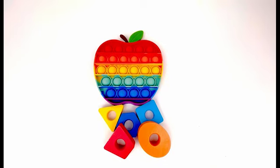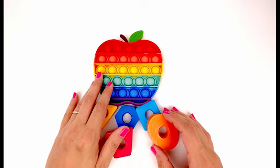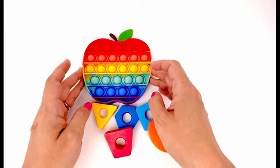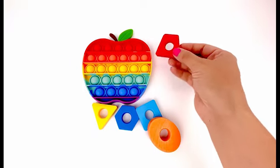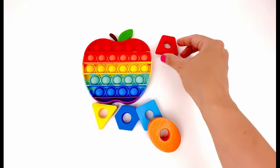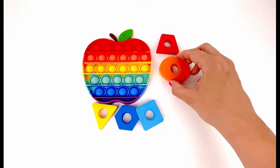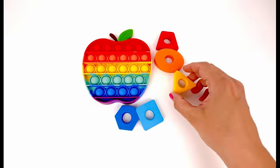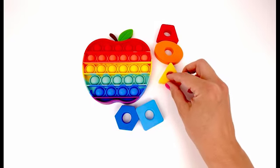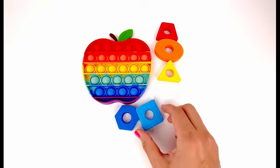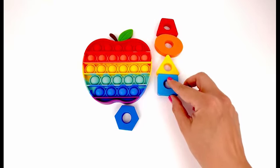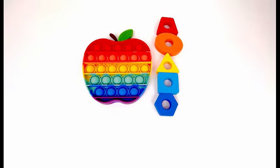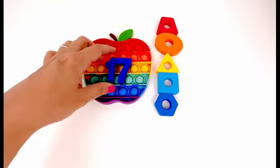We have a pop-up toy here and some shapes with different colors. What should we do with them? Aha, I see. Let's match up the colors of the shapes with the colors of the fidget. From top to bottom, it's first red, then orange, yellow, light blue, and dark blue.